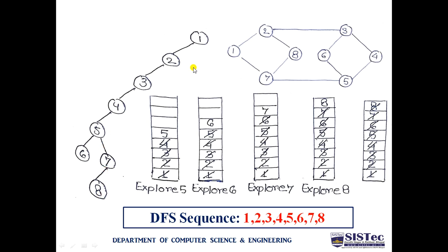The depth-first search traversal sequence is: 1, 2, 3, 4, 5, 6, 7, 8 — following pre-order traversal: root, left, right. Both depth-first search and breadth-first search are graph traversal techniques, using different data structures — stack and queue respectively — to perform the operation. Both are beneficial in many applications including computer networks. Thank you.